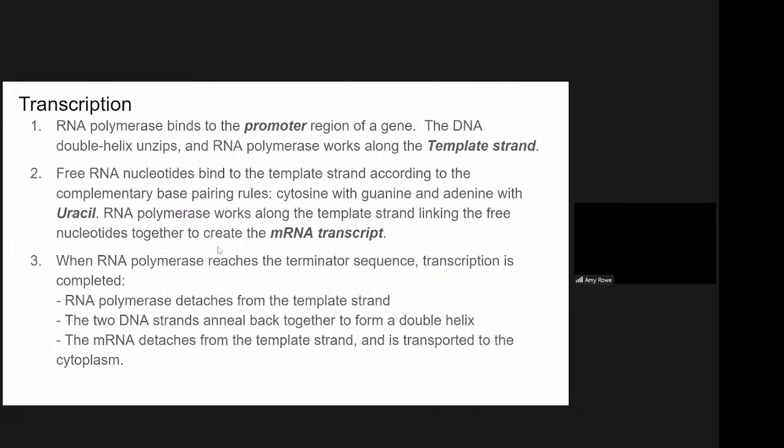All right, so to explain that in words, we'd say that the RNA polymerase binds to the promoter region of the gene and the DNA double helix will unzip and RNA polymerase works along the template strand. So it's important to remember it's the template strand that's the important one. Free RNA nucleotides will bind to the template strand according to the complementary base pairing rules, which we hopefully all remember, cytosine with guanine and adenine with uracil. And RNA polymerase works along the template strand, linking up the free nucleotides together to create the mRNA transcript. When RNA polymerase reaches the terminator sequence, transcription is completed, the RNA polymerase will detach from the template strand, so it will unhitch.